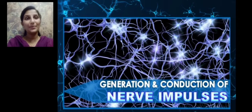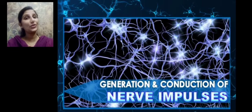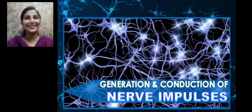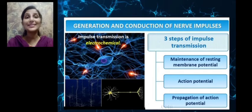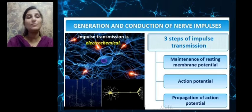Dear children, in this module we are going to learn about how the neuron generates and conducts a nerve impulse. We have learned that information across a neuron is carried in the form of electrical impulses, which is why information travels at a very fast rate across the nervous system. The generation and conduction of nerve impulses has three steps: maintenance of a resting membrane potential, action potential, and propagation of an action potential. Impulse transmission is an electrochemical process.